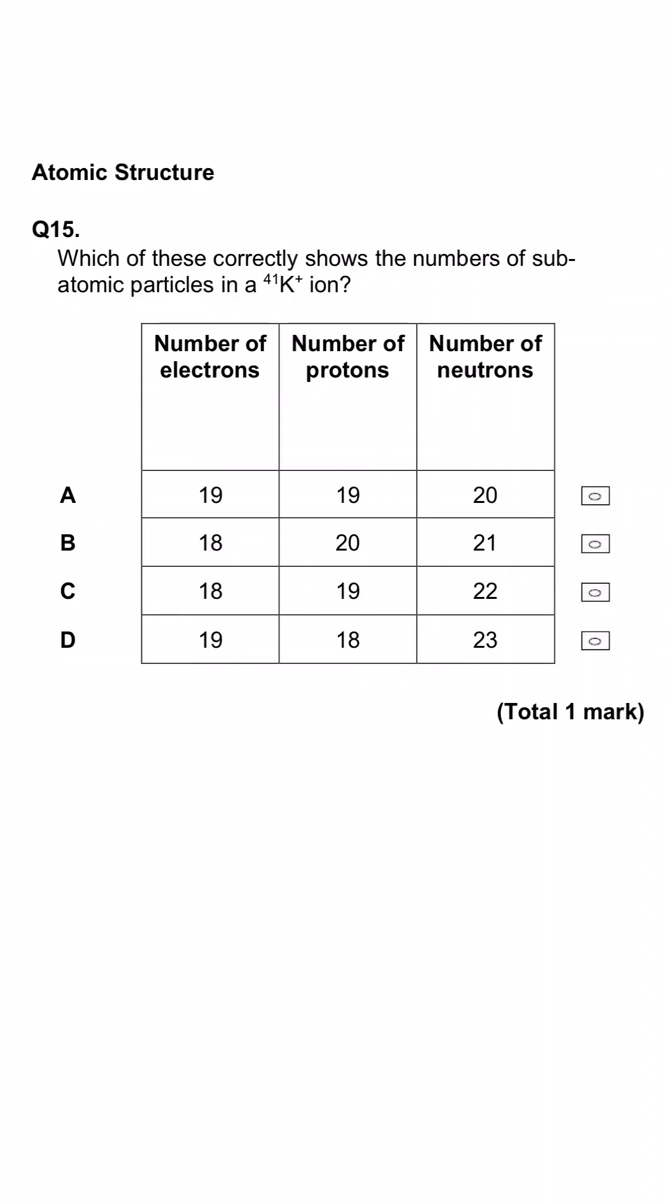Here we're being asked which of these rows shows the correct number of subatomic particles in an ion of potassium-41. So, first of all, it's potassium. When we look up on the periodic table, we can see it's got an atomic number of 19, which means 19 protons. So we can rule out B and D because they have got the incorrect number of protons.